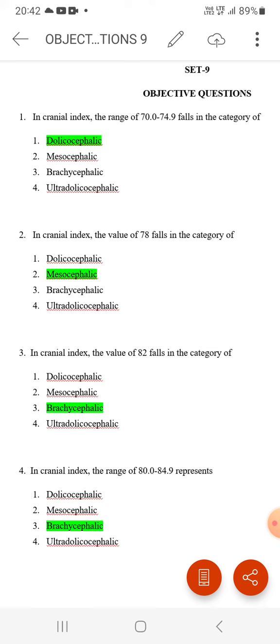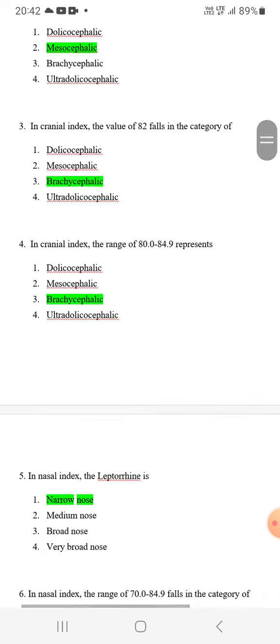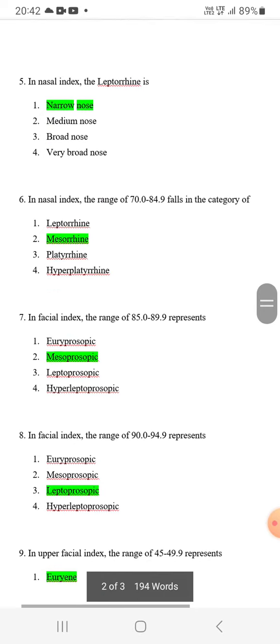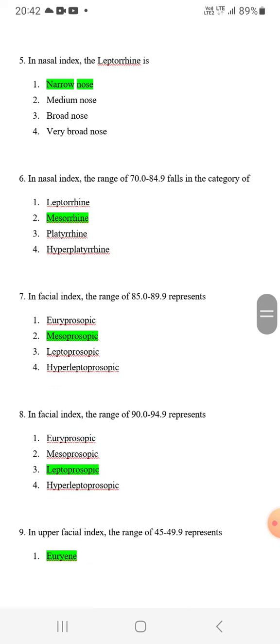In cranial index, the range of 80 to 84 represents brachycephalic. In nasal index, the leptorine is narrow nose.